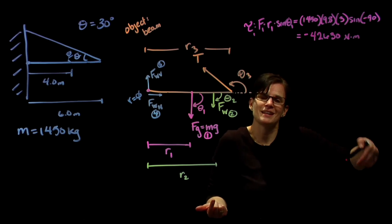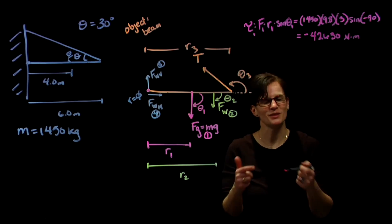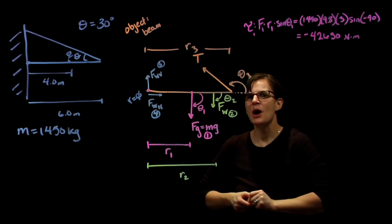That's the torque being exerted by the force of gravity about this pivot point. Should it be negative? It's rotating in the clockwise direction, so yeah, it should be negative.